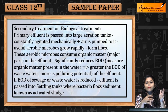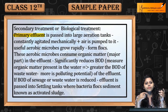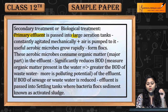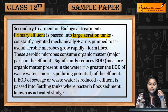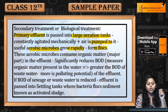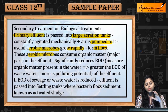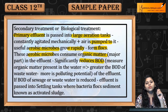Secondary Treatment में क्या होता है? Primary Effluent is passed into Large Aeration Tank. Constantly Mechanically Agitate करते हैं and Air is pumped into it. Useful Aerobic Microbes वहाँ पे rapidly grow करते हैं and Flocs बनाते हैं. यह Aerobic Microbes consume करते हैं Organic Matter को, जिसकी वजह से BOD, Biological Oxygen Demand कम होती है.